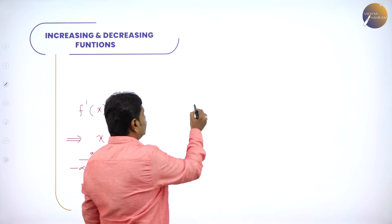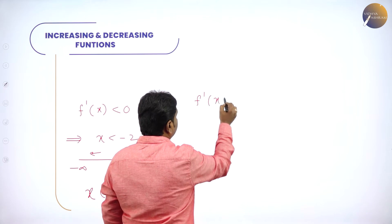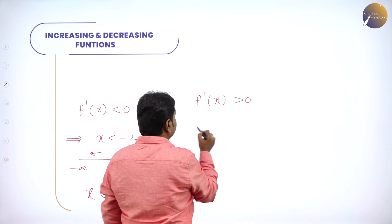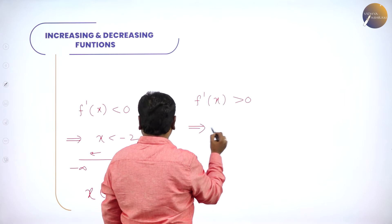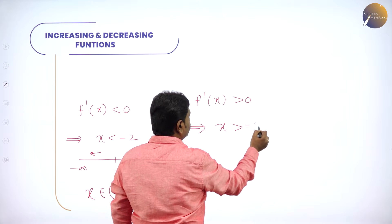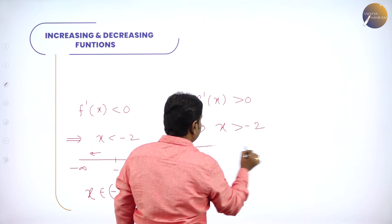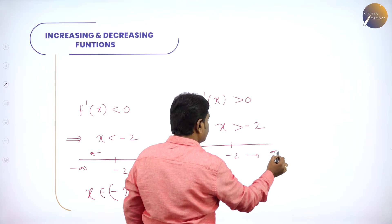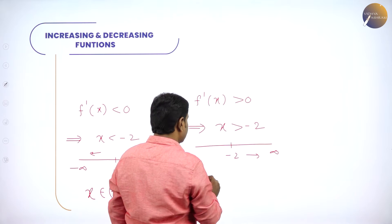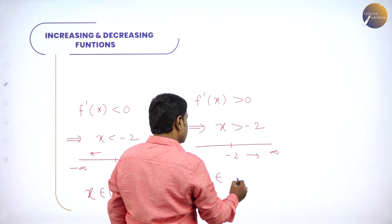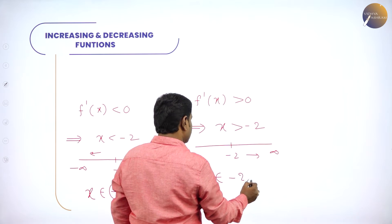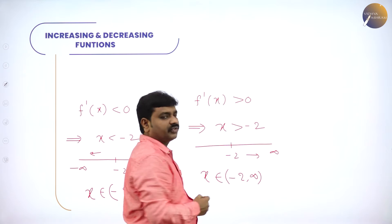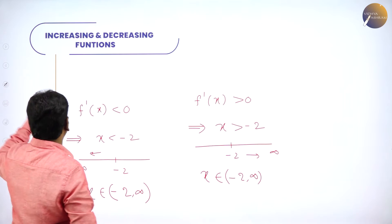For f'(x) greater than 0 we get x greater than minus 2, meaning on the number line we go towards the right until positive infinity, giving x belongs to (−2, +∞). That is what we have solved. Next we have the second problem.